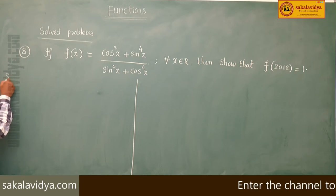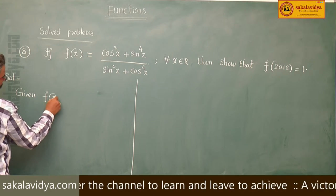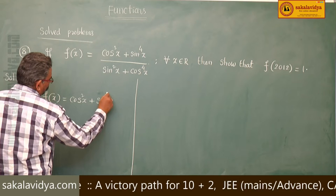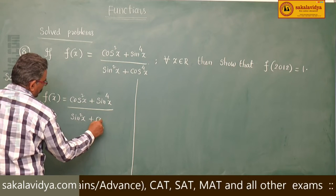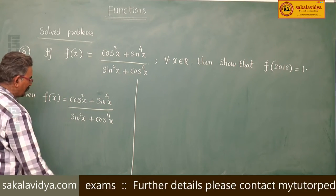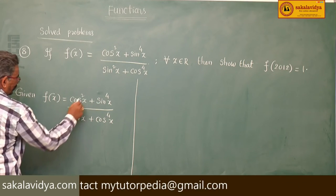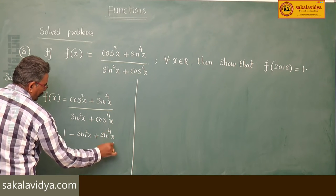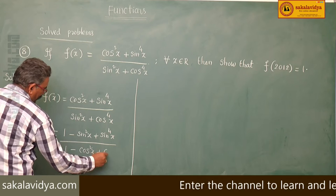Let us solve. Given f of x equals cos squared x plus sin x to the power 4, divided by sin squared x plus cos x to the power 4. Let us change cos squared x in terms of sin x, and sin squared x in terms of cos x. So we can write: numerator becomes 1 minus sin squared x plus sin x to the power 4; denominator becomes 1 minus cos squared x plus cos x to the power 4.